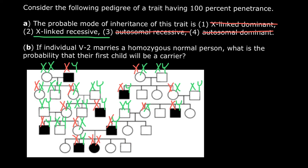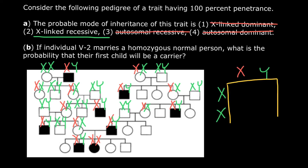Now for the second question: if individual 5-2 — that is generation 5, individual 2, counting left to right — marries a homozygous normal person, what is the probability that their first child will be a carrier? Let's build a simple Punnett square. We know that this person's genotype is defective X and normal Y chromosome. If he marries a phenotypically normal female, what are the chances that this couple would have a child who is a carrier?